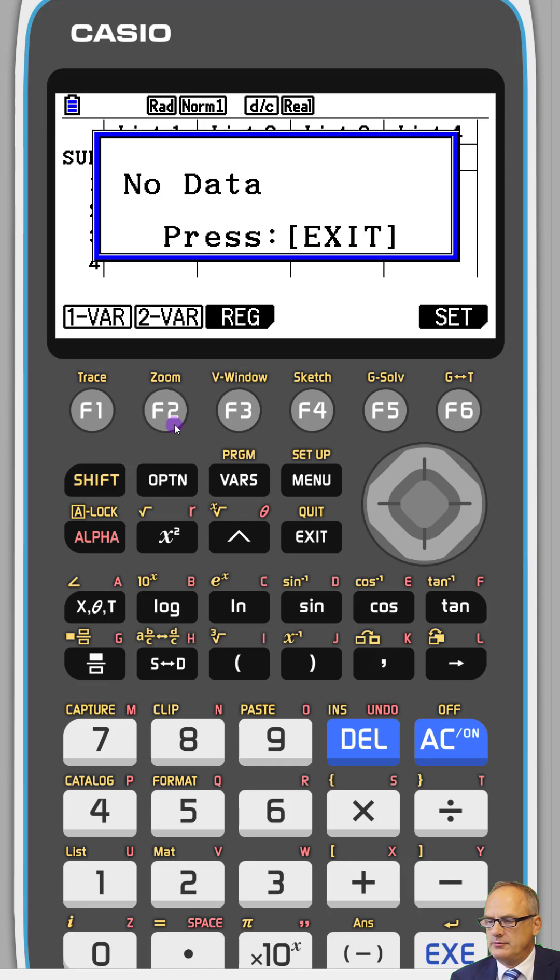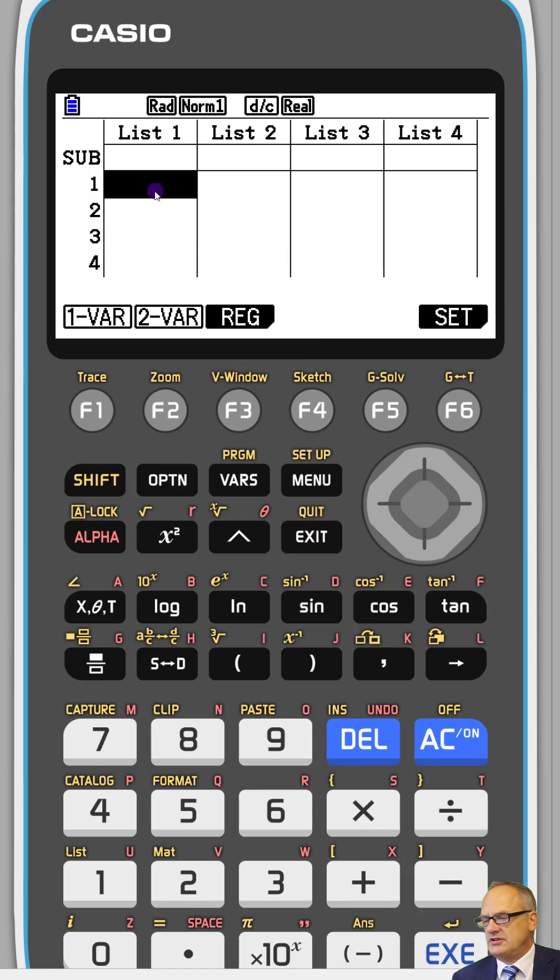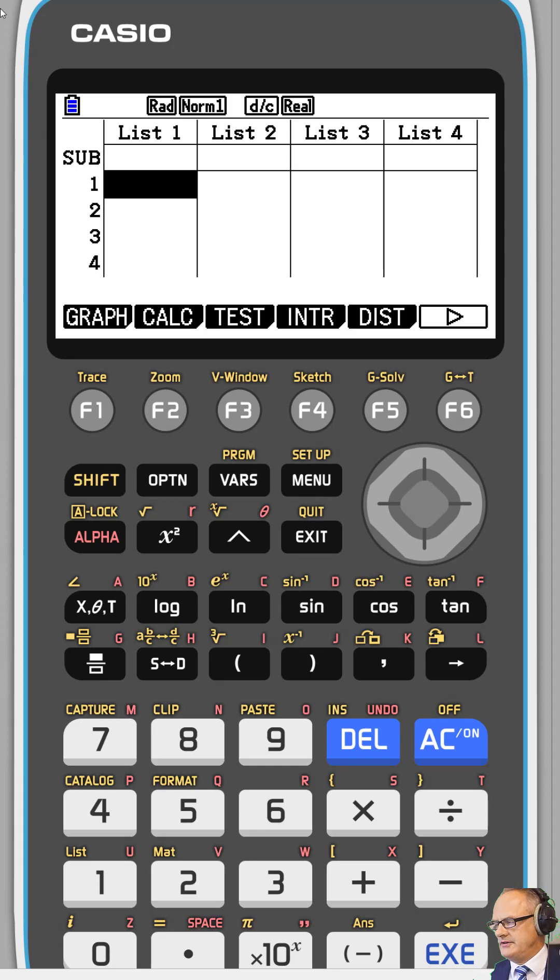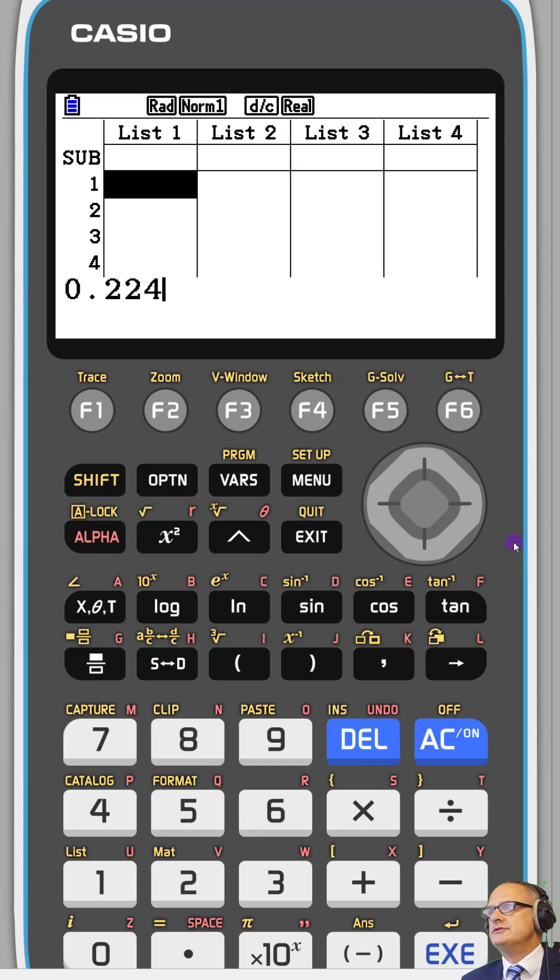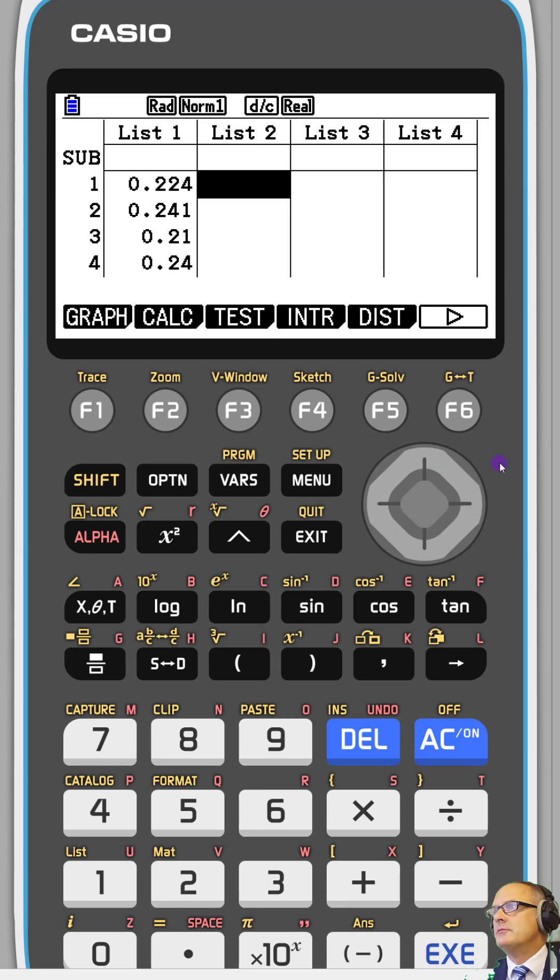So we click on two variables and we don't have any data yet. So let's just press exit and let's just type our data in. Put our X values in first. So we've got 0.224 with the Y values in.